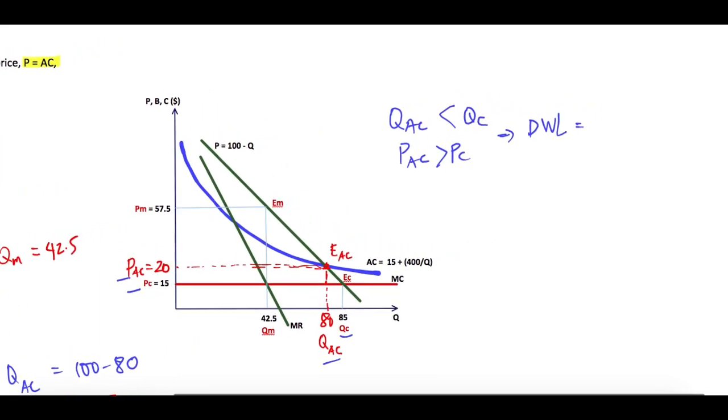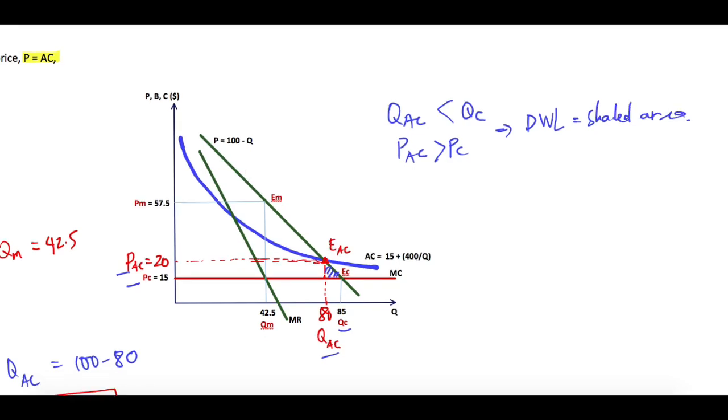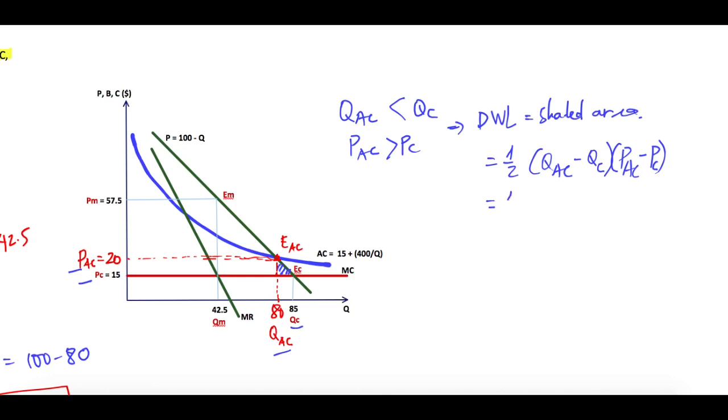The deadweight loss equals the shaded area. This shaded area is the deadweight loss, and it's equal to ½(QAC minus QC) times (PAC minus PC), which equals ½(80 minus 85) times (20 minus 15). And so you have deadweight loss equal to minus $12.5.